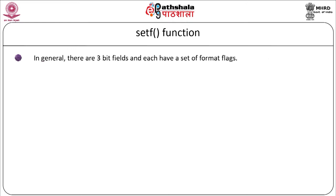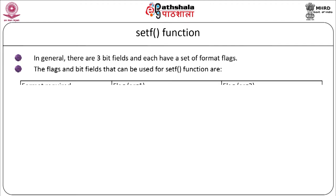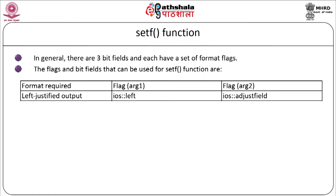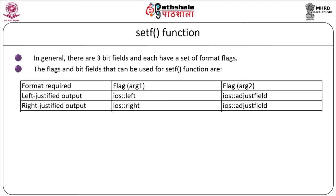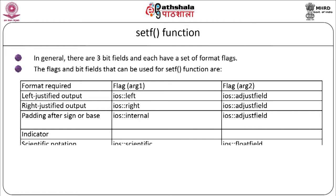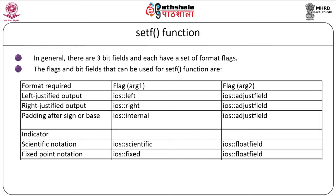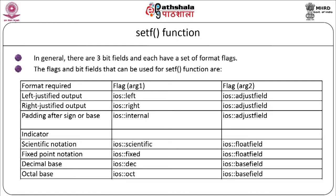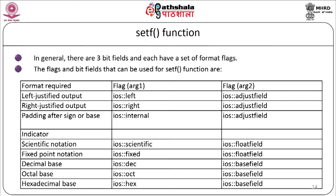There are three bit fields, each with a set of format flags. The flags for setf are: left-justified output uses ios::left with ios::adjustfield; right-justified uses ios::right with ios::adjustfield; padding after sign or base uses ios::internal with ios::adjustfield; scientific notation uses ios::scientific with ios::floatfield; fixed-point notation uses ios::fixed with ios::floatfield; decimal base uses ios::dec with ios::basefield; octal base uses ios::oct with ios::basefield; and hexadecimal base uses ios::hex with ios::basefield.